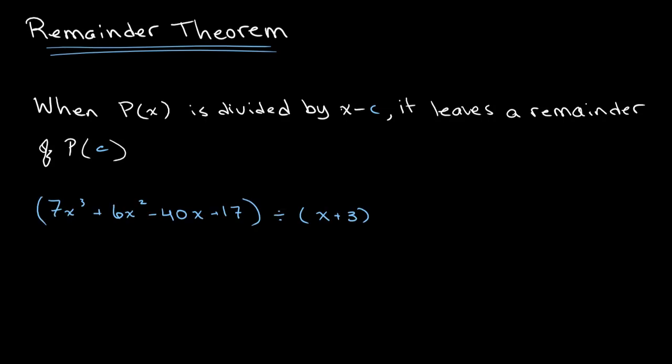So for example, we have a polynomial 7x³ + 6x² - 40x + 17 divided by x + 3.